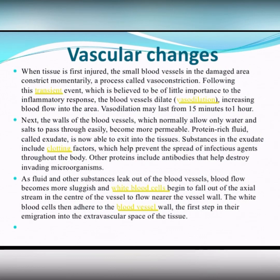When tissue is first injured, the small blood vessels in the damaged area constrict at once — a process called vasoconstriction. Following this short-term vasoconstriction, which is believed to be of little importance to the inflammatory response, the blood vessels undergo vasodilatation, increasing blood flow into the area.